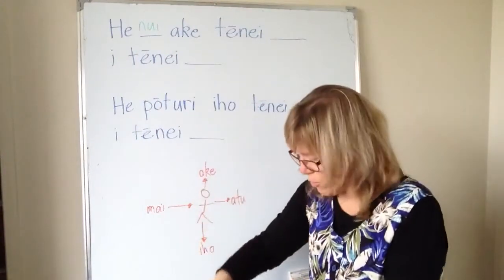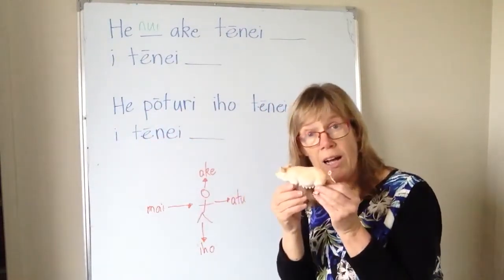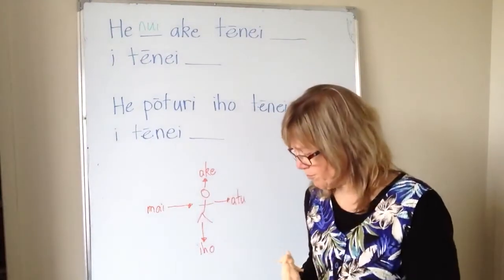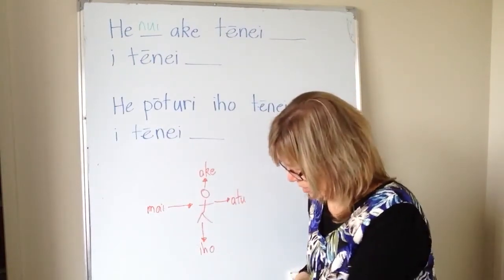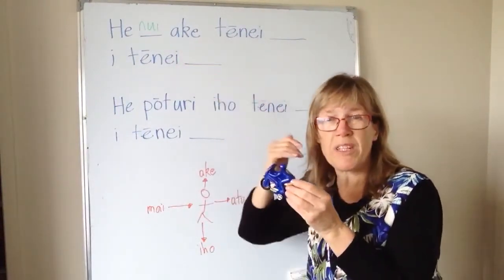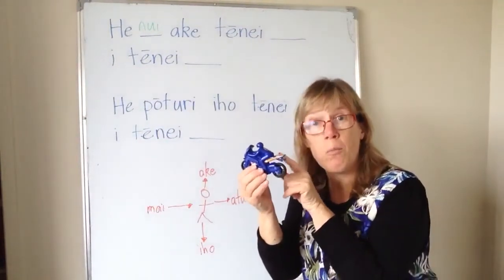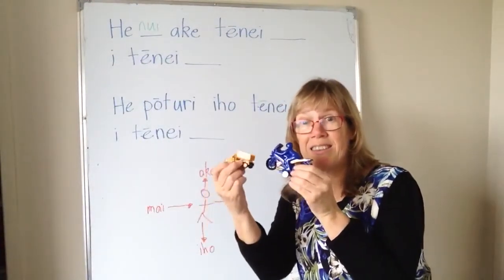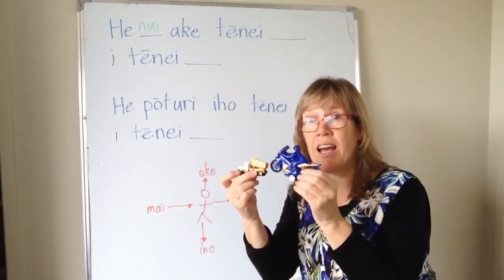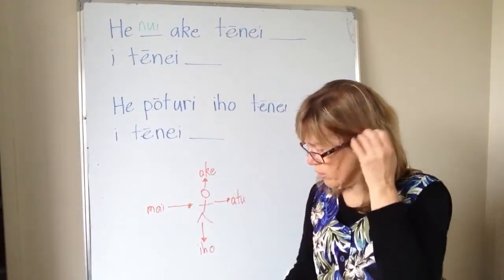So if you've got something different, you don't really need to say tēnei — this could just change to te, which means 'the.' He pōtūri iho te pōaka i te hoiho — the pig is slower than the horse. If you want to do faster than, you can use ake or atu — they're interchangeable. He pere atu te motopaika i te taraka — the motorbike is faster than the truck.